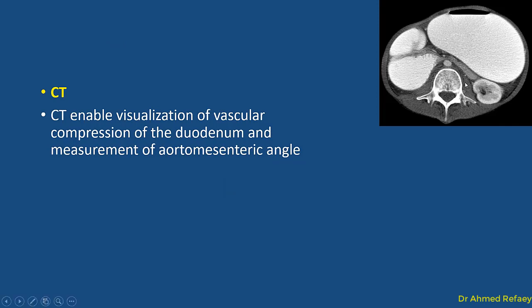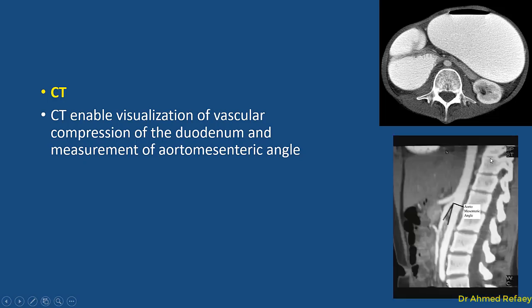By CT scan, we can see marked proximal dilatation of the stomach and the second and proximal third part of the duodenum, with distal collapse of the third part of the duodenum at the region of the superior mesenteric artery. On sagittal reconstruction, we can easily measure the angle between the aorta and the superior mesenteric artery, which will be less than 22 degrees.